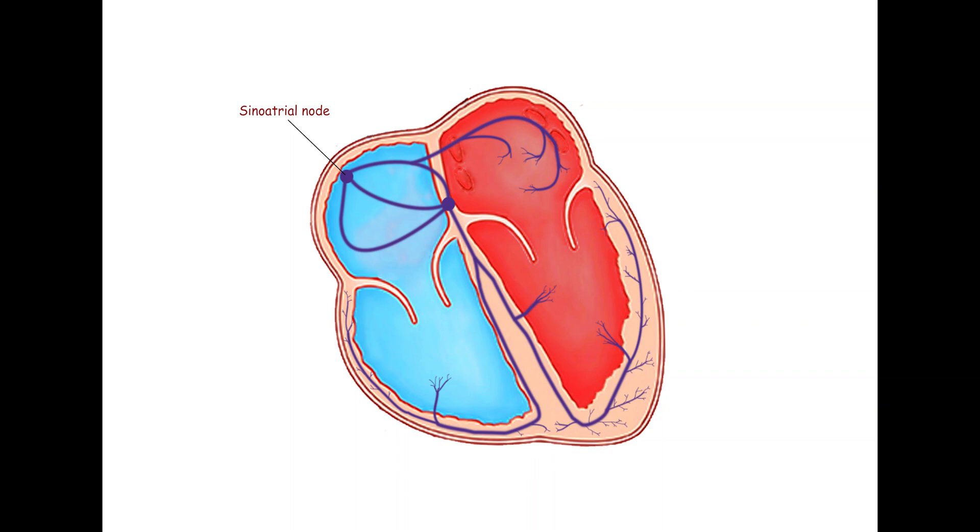This impulse then spreads to the atrioventricular node via Bachman's, Wenckebach's, and Thorel's bundles. The left atrial branch of Bachman's bundle is important for left atrial depolarization.